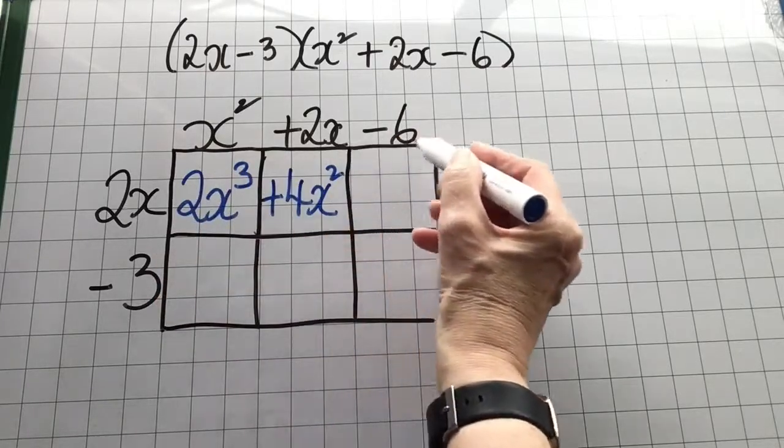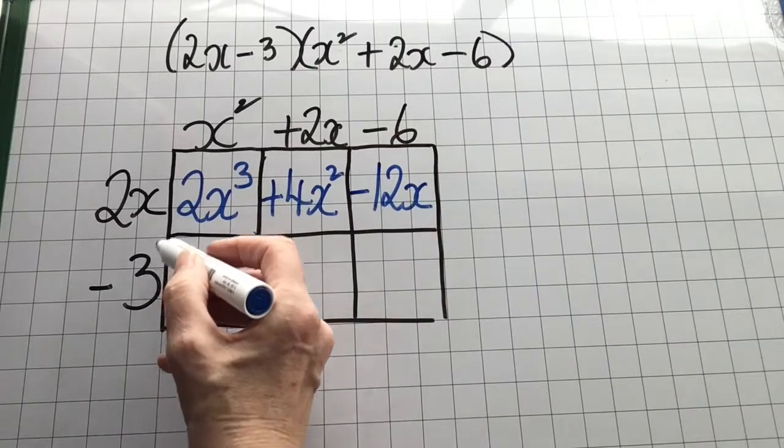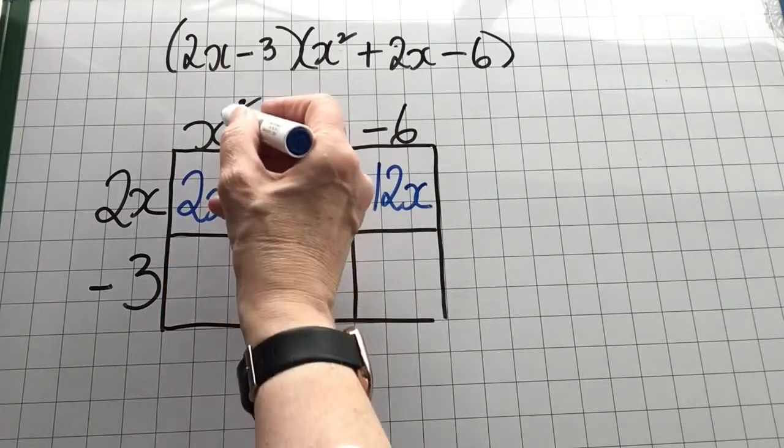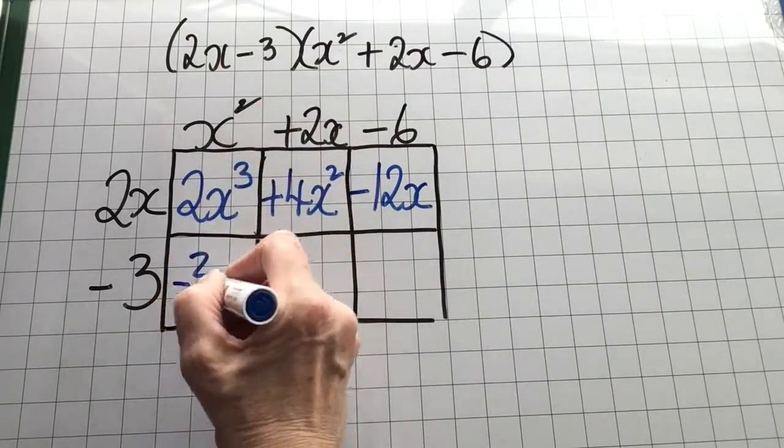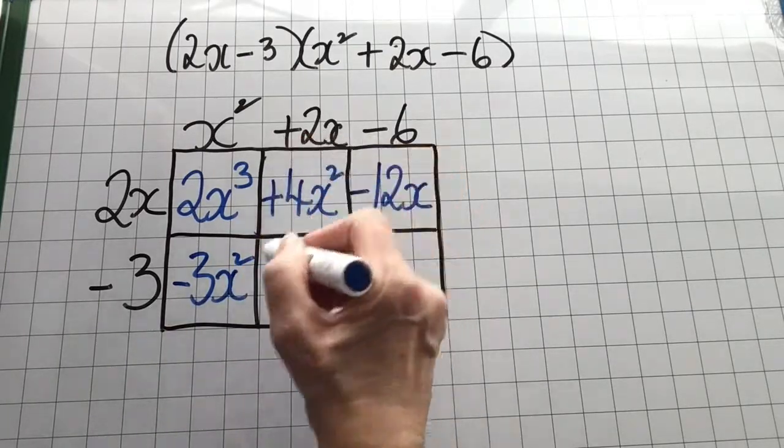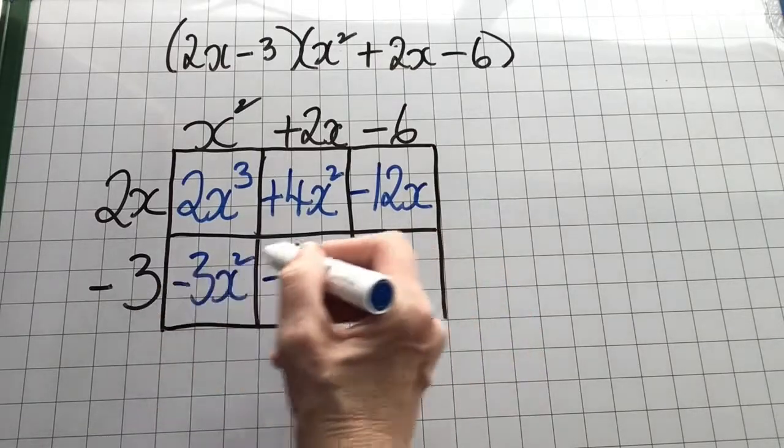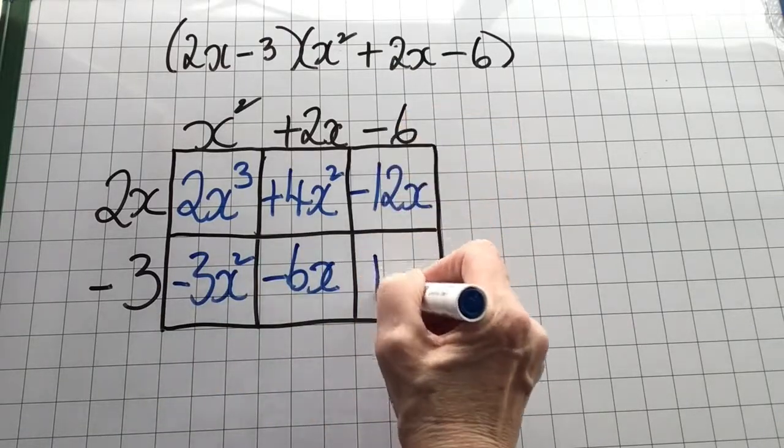Minus 3 by x squared is minus 3x squared. Minus 3 by plus 2x is minus 6x. And minus 3 by minus 6 is plus 18.